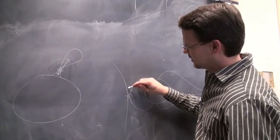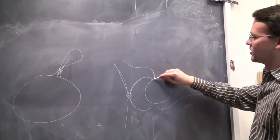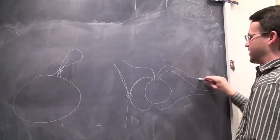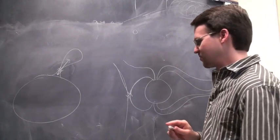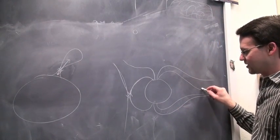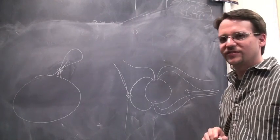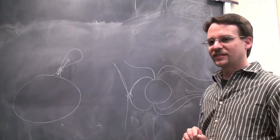What that does is it allows these field lines to drape over the back of the magnetosphere and load the back end with energy. You can get reconnection out here and again drive plasma flow away and towards the earth.